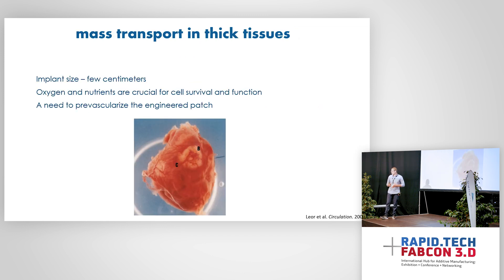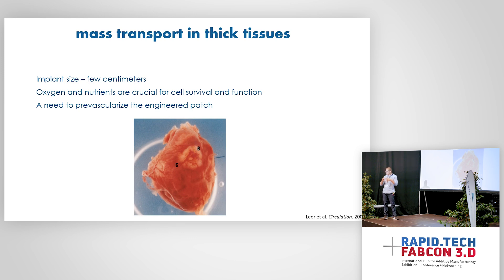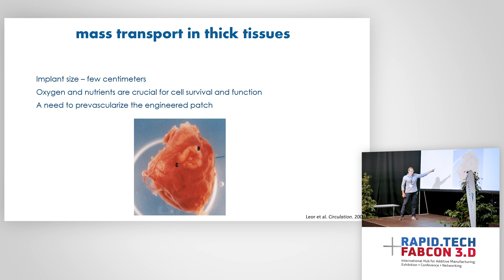We want to create a large patch. The scar tissue in patients can reach up to a few centimeters in size. And in our body, each and every cell is about 150 microns from the nearest blood vessels. So there is a need to form the tissue with integrated blood vessels that will supply and nourish the cells with blood. Here you can see a picture of a rat's heart with a heart patch transplanted upon it without any blood vessels. Most of it is white, because most of the cells die in this patch — it didn't have any blood vessels to support it.